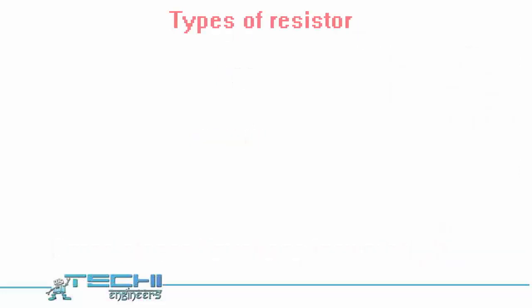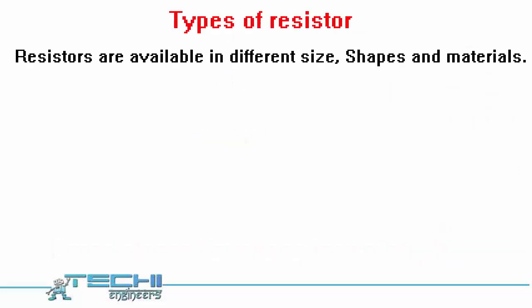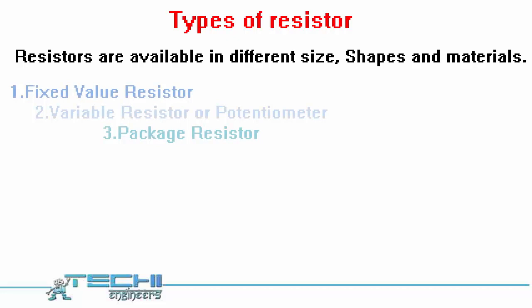Now we are going to study about types of resistors. Resistors are available in different sizes, shapes, and materials. Based on the resistance value of the resistor, resistors can be classified into the following groups.